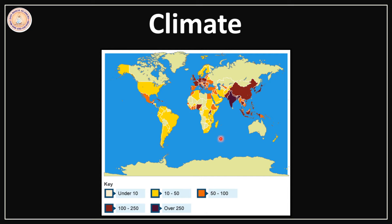You can see this on the map. The concentration of population is very high. These dark colours show that more than 250 people live on an average in one square kilometre area.